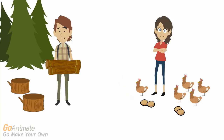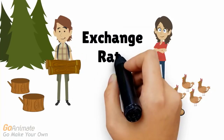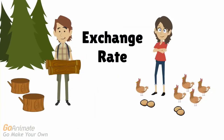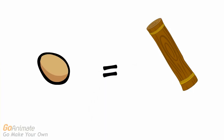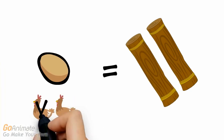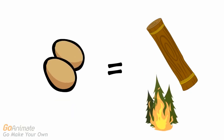Given enough time, an exchange rate will also develop — say, one egg for one medium-sized log. But these rates could change. If some of the chickens died, Mary might demand more logs per egg since she will have fewer eggs to trade. If there were a forest fire, the lumberjack might want more eggs in exchange for his wood.